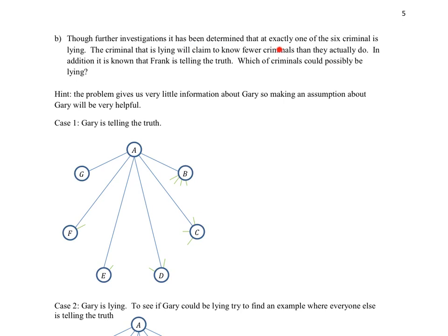Let's think about this sentence. It's saying that the one criminal that is lying is not going to sit there and say I know all the bad people. It's going to lie in the other direction. It's going to say I know three, but that criminal might actually know five. They'll lie to go smaller. They won't lie to go large. In addition, we know that Frank is telling the truth. So which of the criminals could possibly be lying?